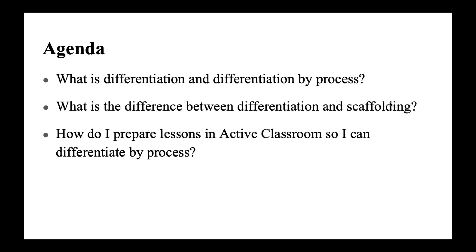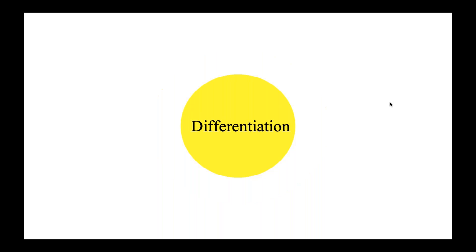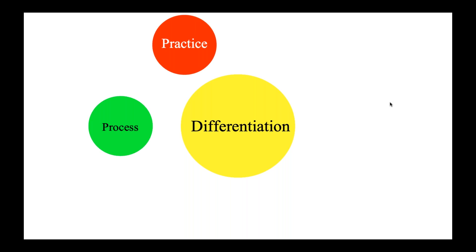First, let's define differentiation and what that means in the classroom. Differentiation refers to a wide variety of techniques and lesson adaptations to instruct a diverse group of students with diverse learning needs. Differentiation typically entails modifications to six different aspects of instruction, including practice — which is how teachers deliver instruction — process, or how the lesson is designed for students, and products, or the kind of work product students will be asked to complete.